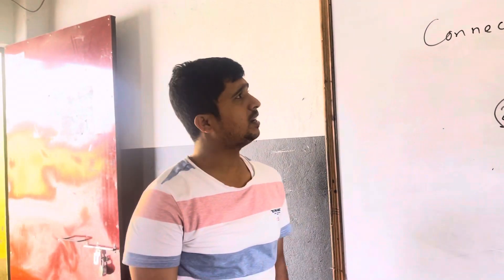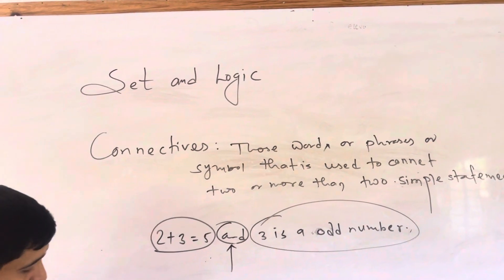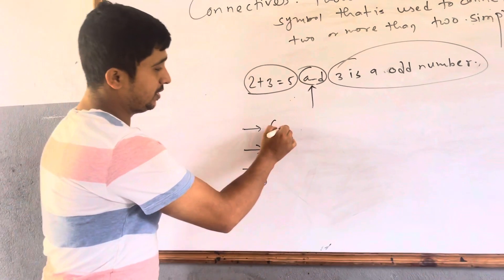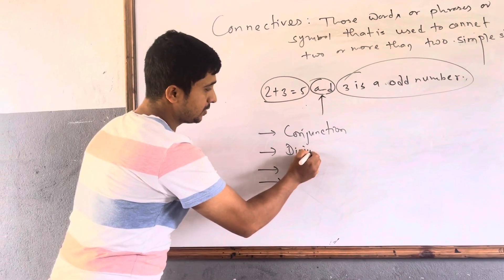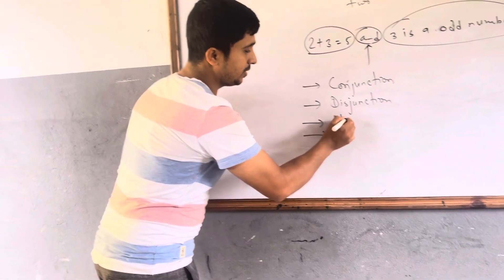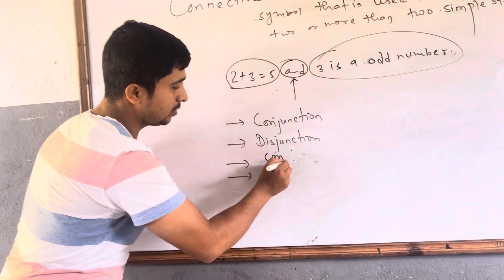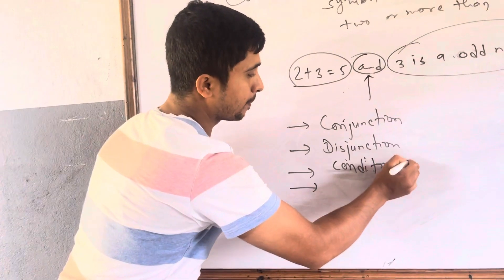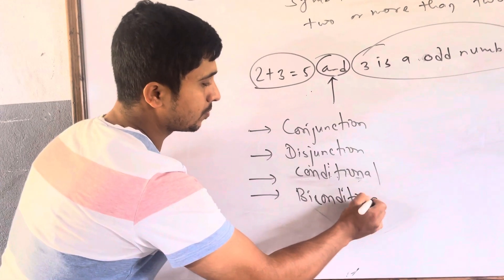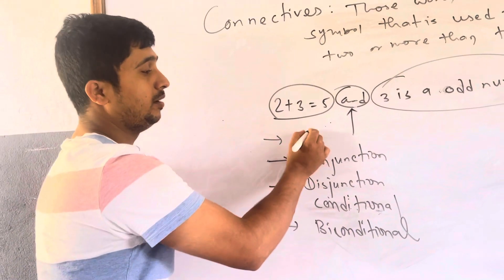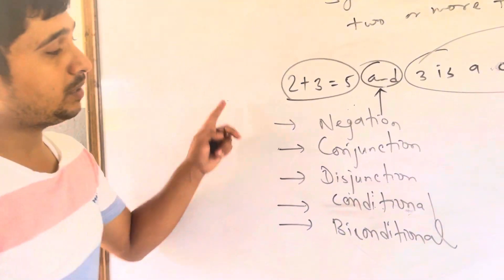Now let's talk about what kinds of connectives we use in mathematics. Especially in this class, we will discuss: conjunction, disjunction, conditional, biconditional, and negation. These are the mathematical connectives.